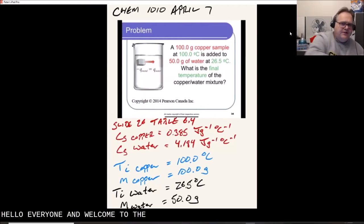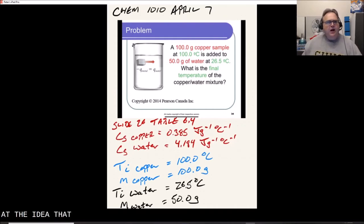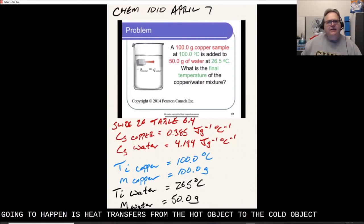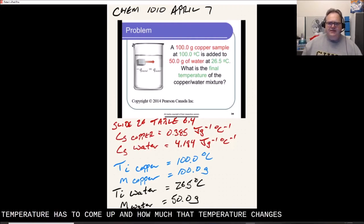Hello everyone and welcome to the problem solving for April 7th. Here we're looking at the idea that when a hot object comes into contact with a cold object, what's going to happen is heat transfers from the hot object to the cold object until they achieve the same temperature.